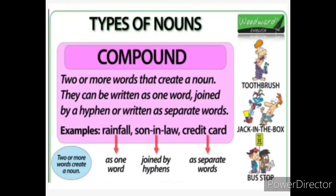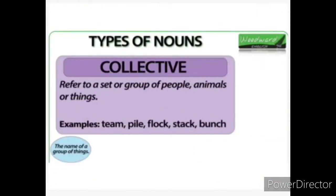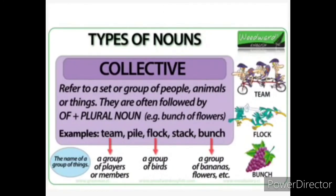Now we are going for the next one: collective noun. Collective noun refers to a set or group of people, animals, or things. Examples: team, pile, flock, stack, bunch. For example, a group of people comes under collective noun. A team of players. A pile of books. A flock of sheep or birds. A bunch of grapes or bunch of flowers. Collective noun means collectively persons, people, or anything — a group of players or members, a group of birds, a group of bananas or flowers, etc.